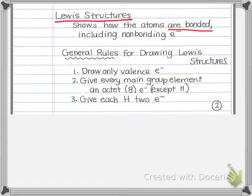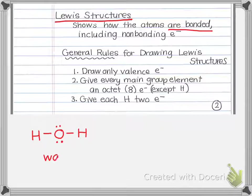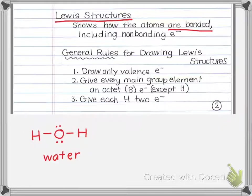For example, the Lewis structure for water looks like this. Lewis structures don't have to show shape — they can be drawn at 90-degree angles. We'll learn about shape in a future lesson. Lewis structures show the types of bonds, like water's two single bonds, and the number of lone pairs. In this case, oxygen has two lone pairs, also called non-bonding pairs.